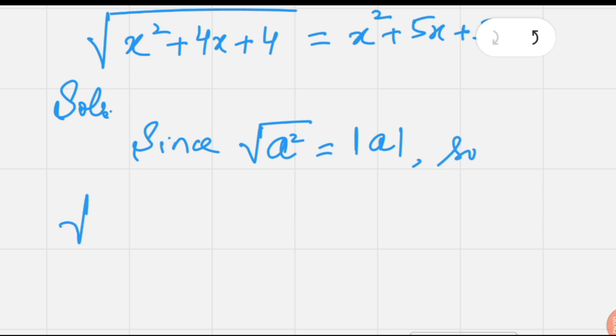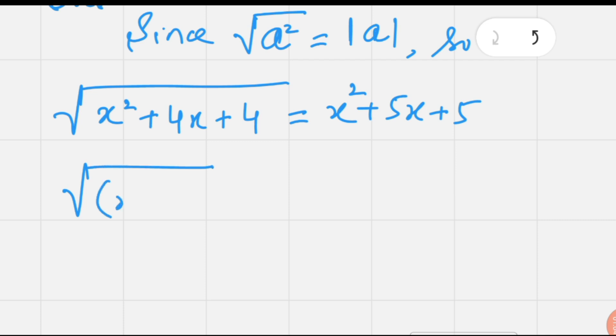On the basis of this equation, if we see on the left side under the square root, there is a perfect square: x² + 4x + 4, which can be written as (x + 2)².